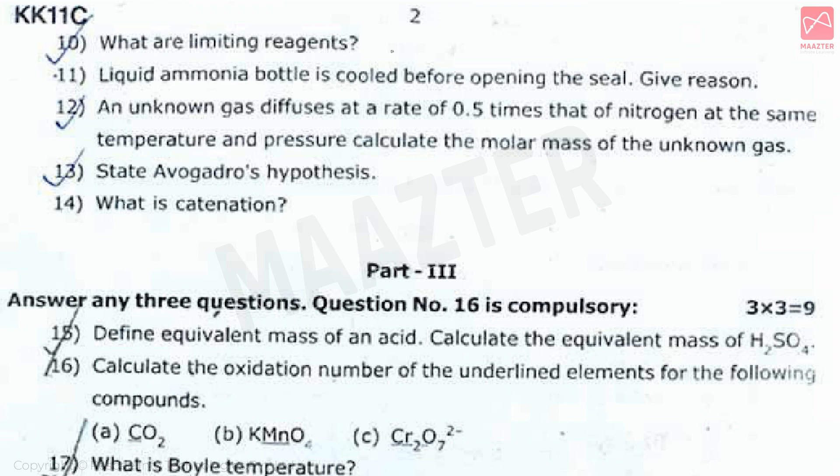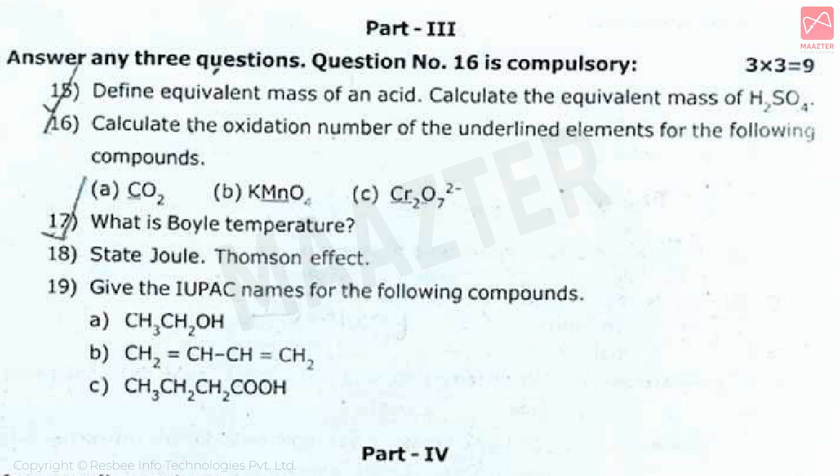The next question: an unknown gas diffuses at a rate of 0.5 times that of nitrogen at the same temperature and pressure. Calculate the molar mass of the unknown gas. The next question: state Avogadro's hypothesis. And the final two-mark question: what is catenation? Catenation is a very important topic for 11th standard Chemistry. Next, we move to the 3-mark section.